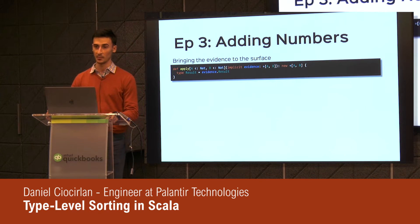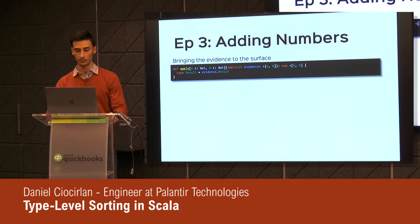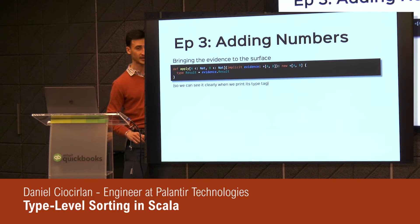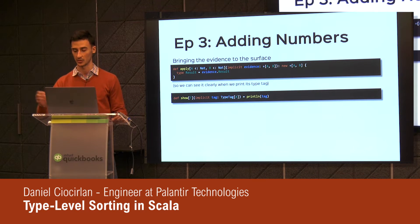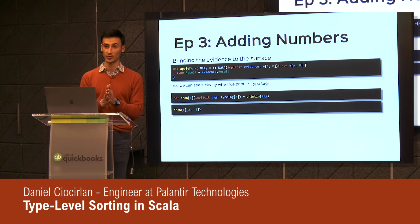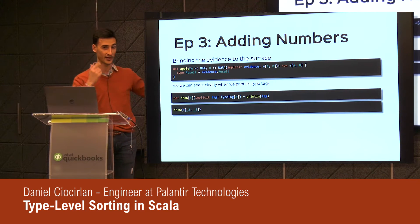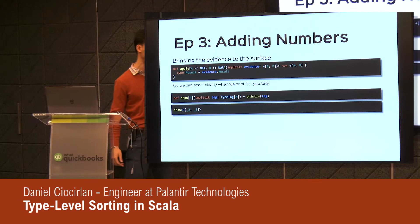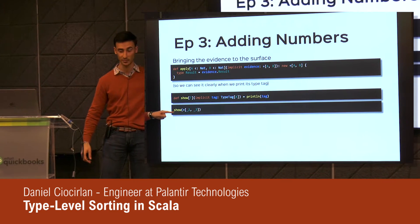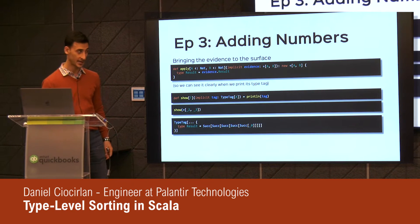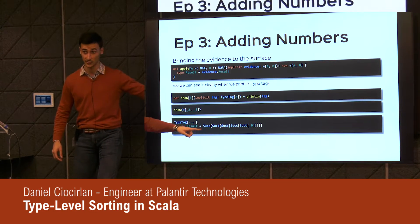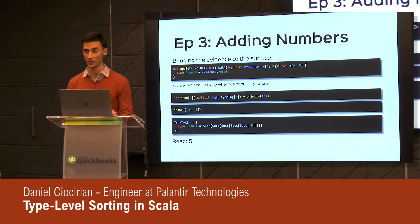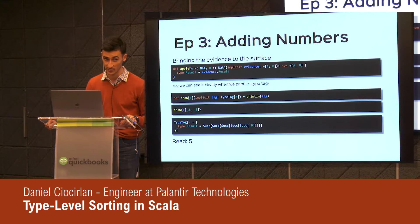I'm also defining a small apply method that brings the evidence to the surface — if the compiler can find evidence of A plus B, I just surface that up. In my main application I'm defining a small show method which fetches a type tag and brings it to the console. So if I call the show method on Plus[Two, Three], making the compiler build an automatic implicit instance of Two plus Three, I get a type tag in which the result abstract type number is Succ[Succ[Succ[Succ[Succ[Zero]]]]], which is automatically computed by the compiler as the number five. This is pretty magical.